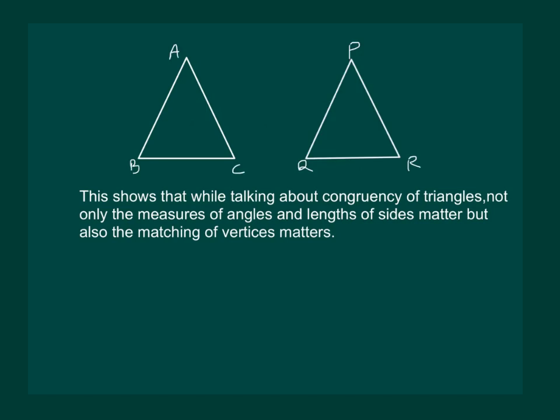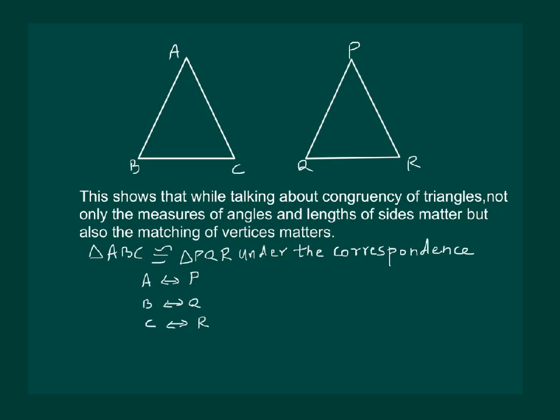That means triangle ABC is congruent to triangle PQR under the correspondence that A lies on P, B lies on Q, and C lies on R. This can also be written as A, B, C lies on PQR respectively. Hence, we understand the meaning of correspondence when we talk about congruency of triangles.